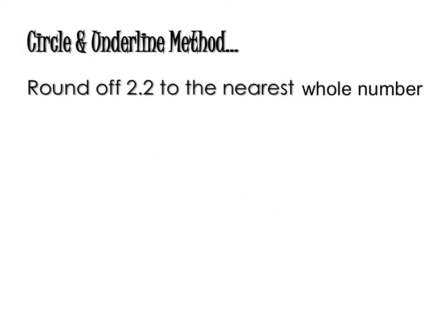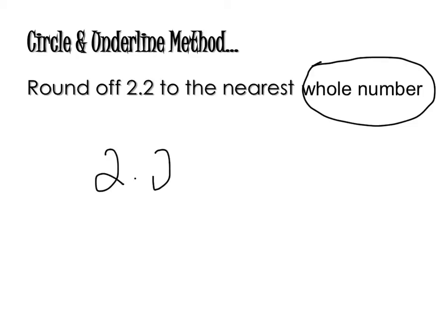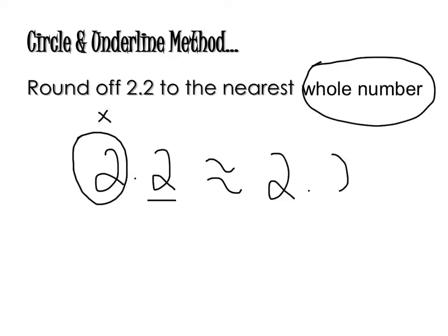So this is the circle and underline method, and we use the exact same method for decimals. Let's try: round off 2.2 to the nearest whole number. I'm going to circle the whole number. In 2.2, the whole number is 2. I underline the one next to it. Because 2 is less than 5, I don't do anything — so the nearest whole number is 2, or you can write it as 2.0. It's exactly the same method.